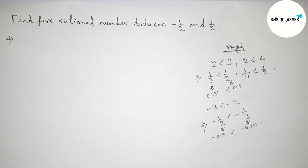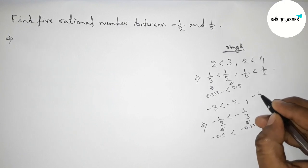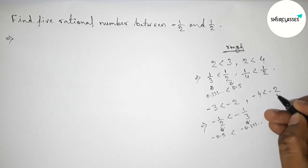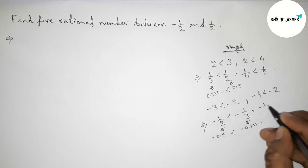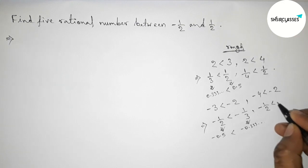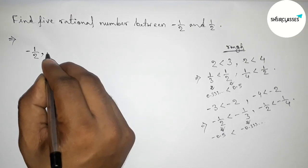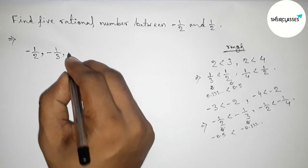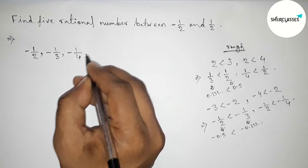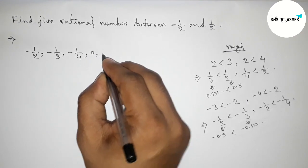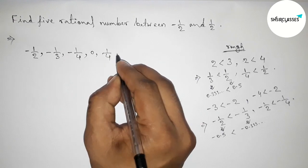Now similarly, taking minus 4 less than minus 2, so by similar way we can write minus 1 by 2 less than minus 1 by 4. So now first write down here all the rational numbers first.